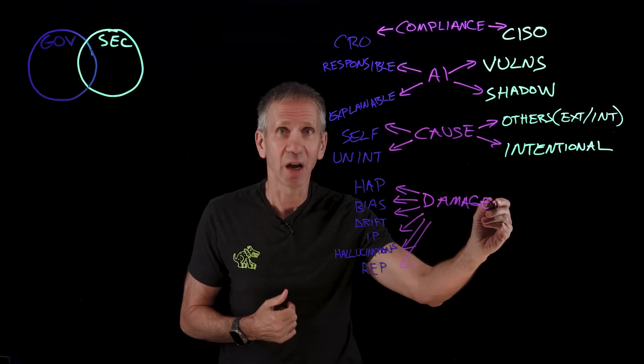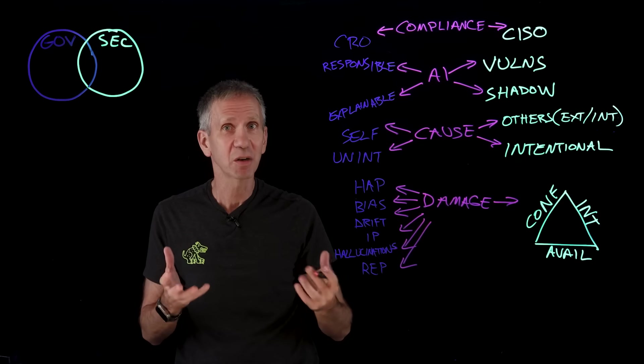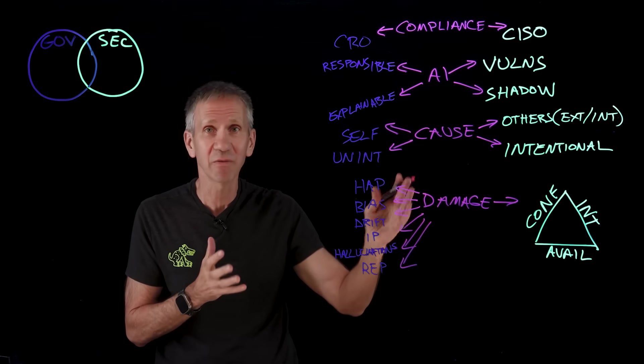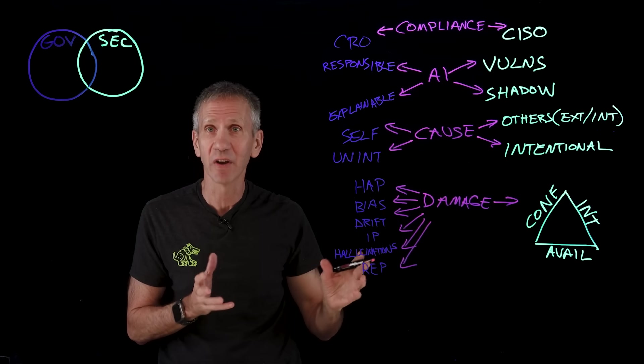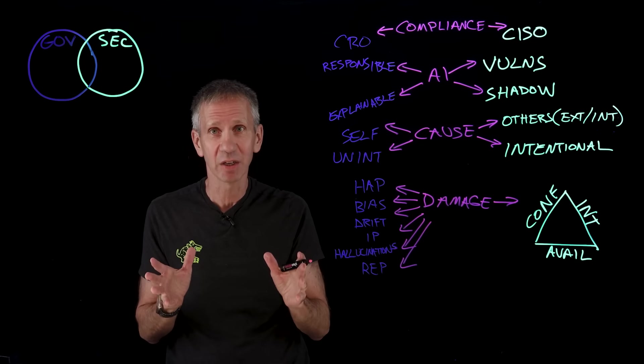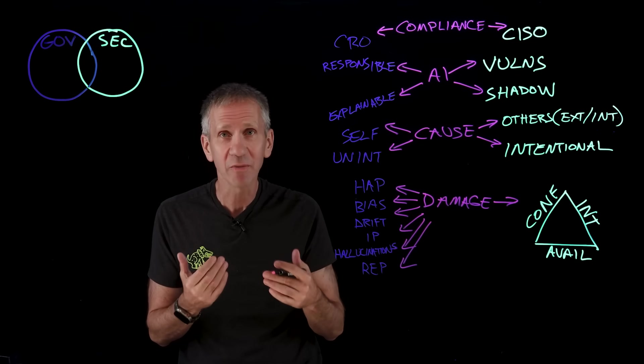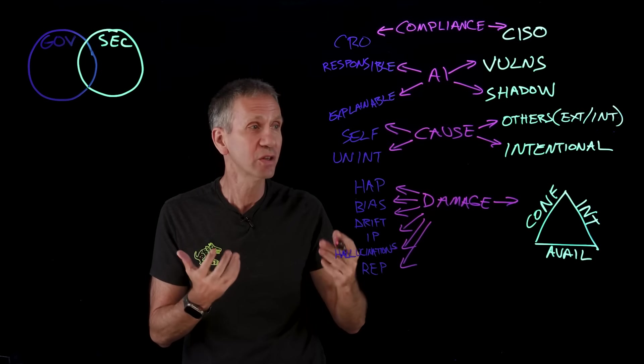On the security side, you've heard me talk about this thing called the CIA triad, where we're looking at confidentiality, integrity, and availability. Those are the three things that we're about in every security case. So confidentiality, we want to make sure that the system doesn't exfiltrate sensitive information outside of our system.